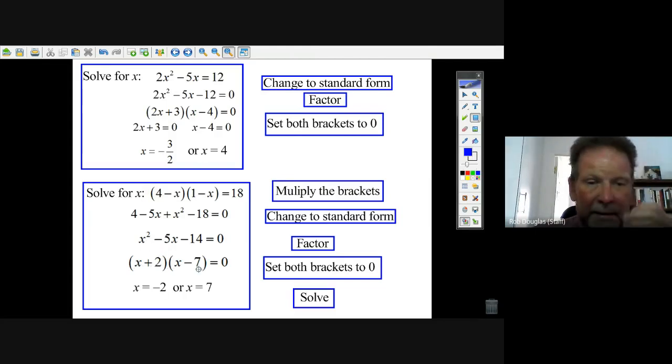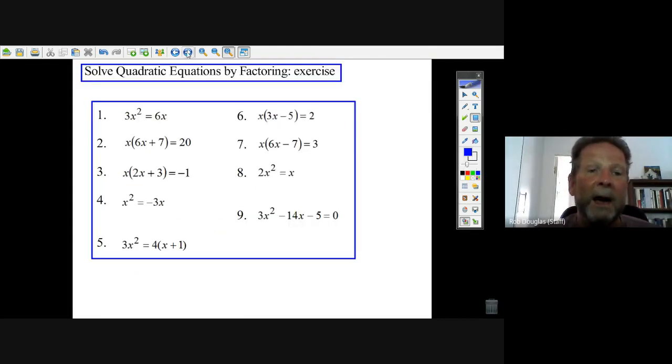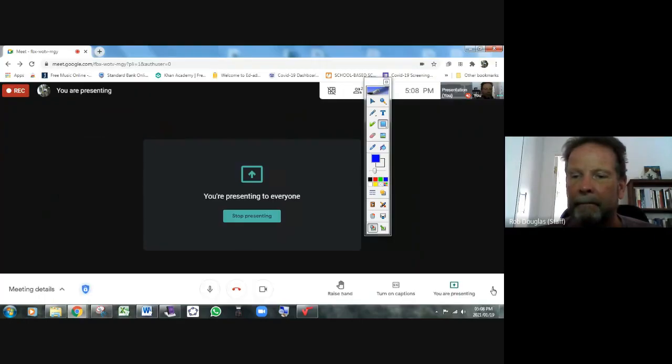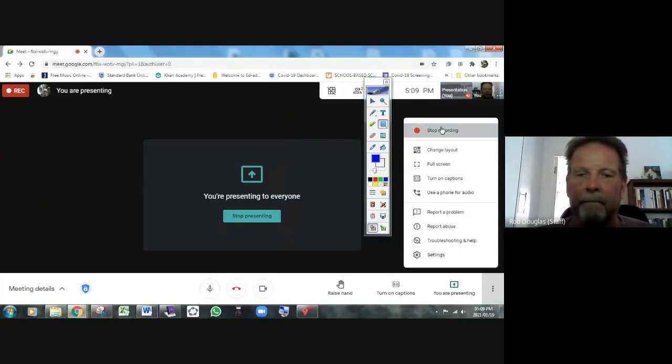If you have 2x squared minus 5x minus 12, put it in standard form. 2x and x is the only way you're going to get 2x squared. Try different combinations of numbers that equal 12 to get minus 5x. 2x times minus 4 is minus 8x, 3 times x is positive 3x. Minus 8x plus 3x makes it work. Set 2x plus 3 equal to zero and x minus 4 equals zero. X equals 4 is easy here. When you solve this, subtract 3 and divide by 2, you'll get minus 3 halves. There's a quick way to get the right answer: it's always this number over this number and the opposite sign.